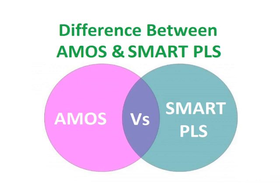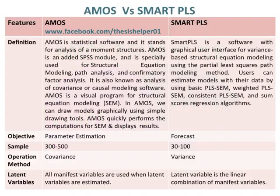Difference between AMOS and SMART PLS. AMOS is statistical software and it stands for Analysis of Moment Structures. AMOS is an added SPSS module and is specially used for structural equation modeling, path analysis, and confirmatory factor analysis.